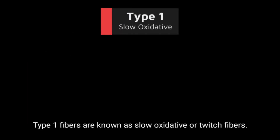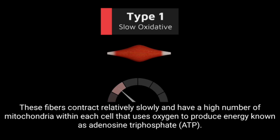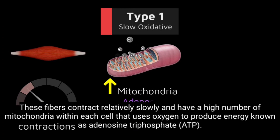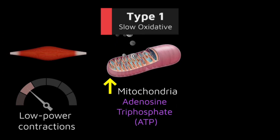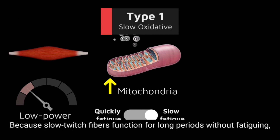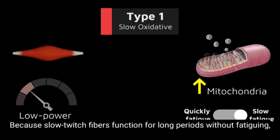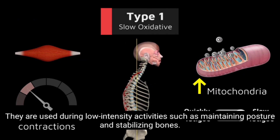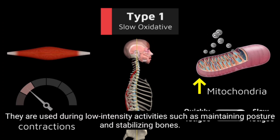Type 1 fibers are known as slow oxidative or twitch fibers. These fibers contract relatively slowly and have a high number of mitochondria within each cell that uses oxygen to produce energy known as adenosine triphosphate, ATP. They produce low power contractions over long periods of time and are slow to fatigue. Because slow twitch fibers function for long periods without fatiguing, they are used during low intensity activities such as maintaining posture and stabilizing bones.